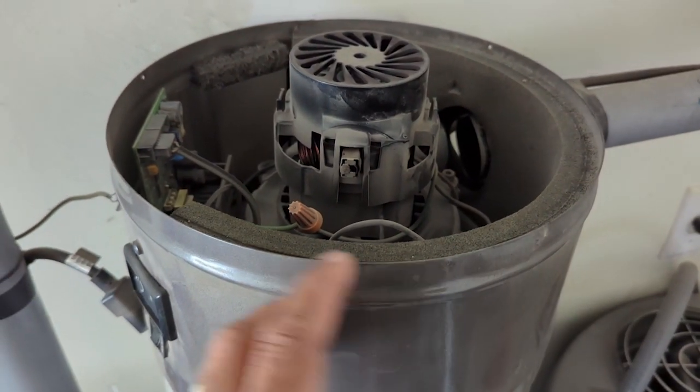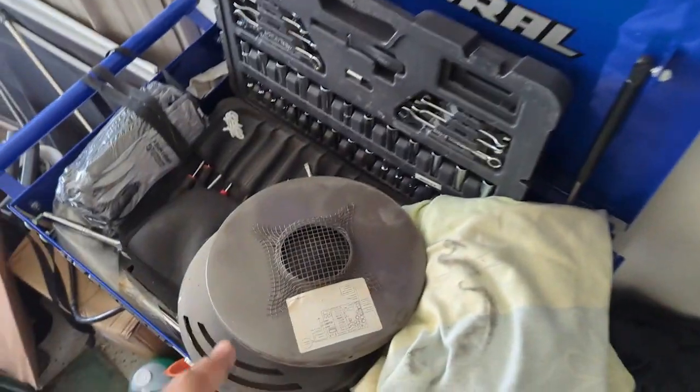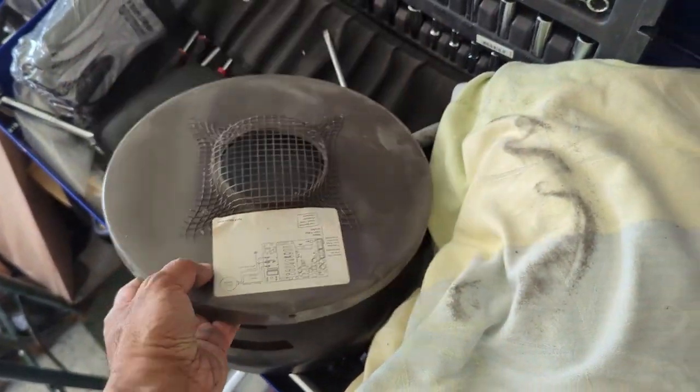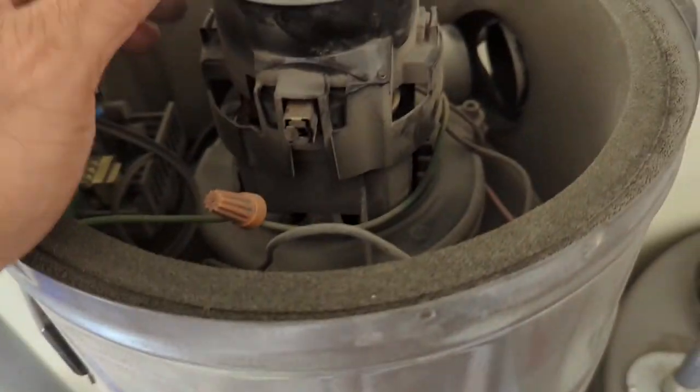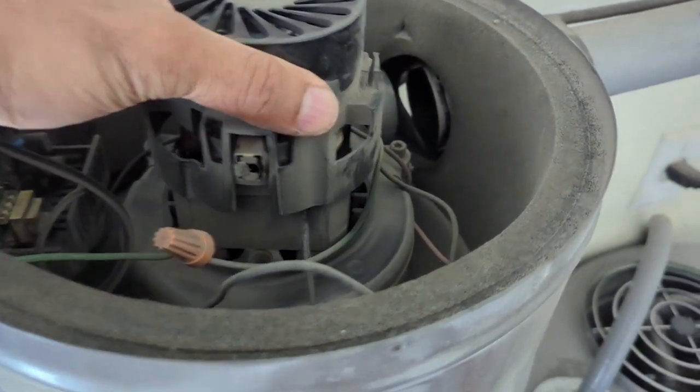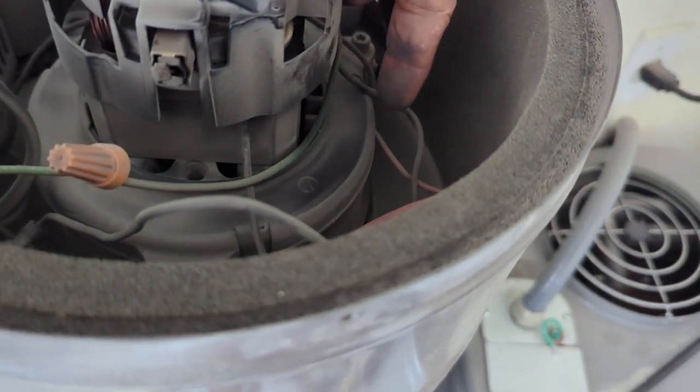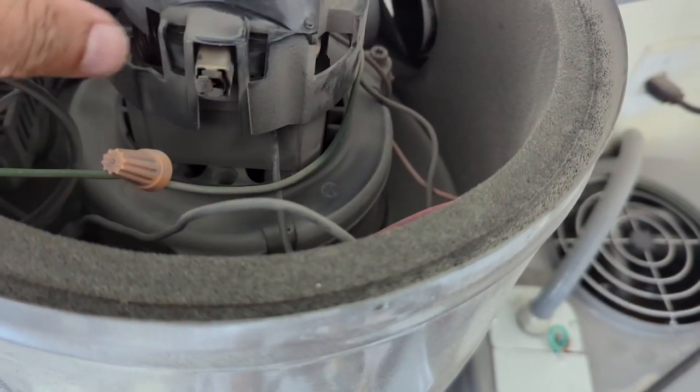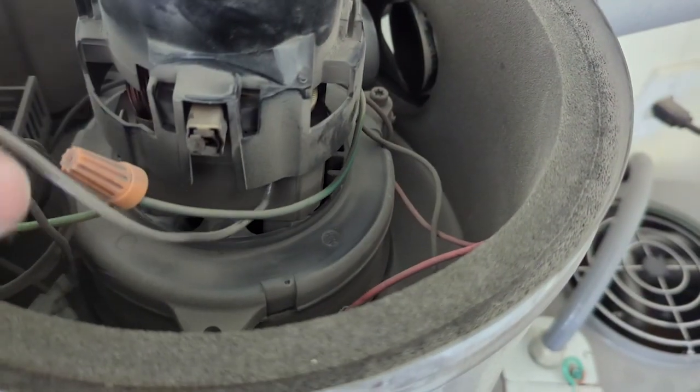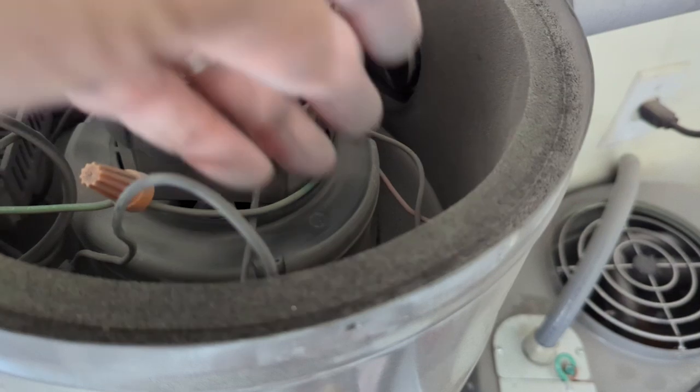I had three screws on the side to take the cover off, which was this cover, and then this came off after it. This is what the motor looks like. It just sits in here by gravity. There's a rubber gasket that goes inside here, and it's wired with a ground and one live wire, I think.